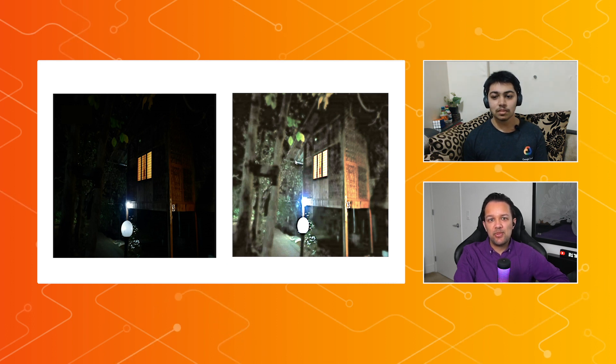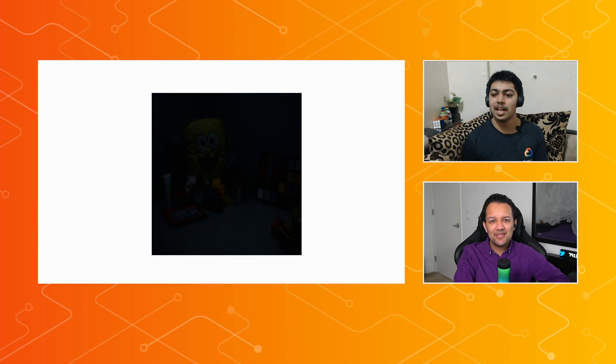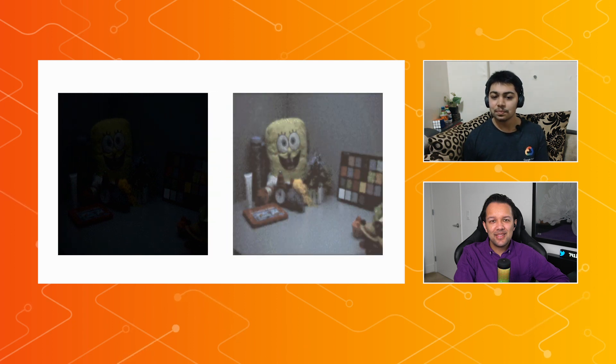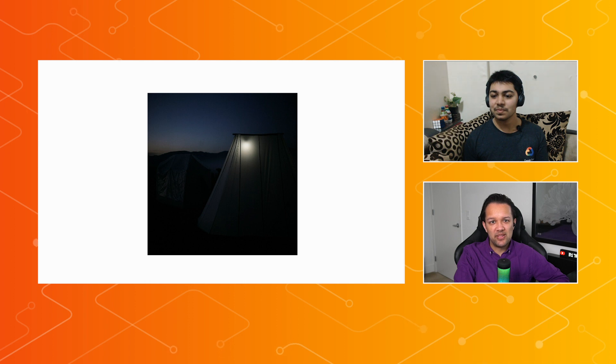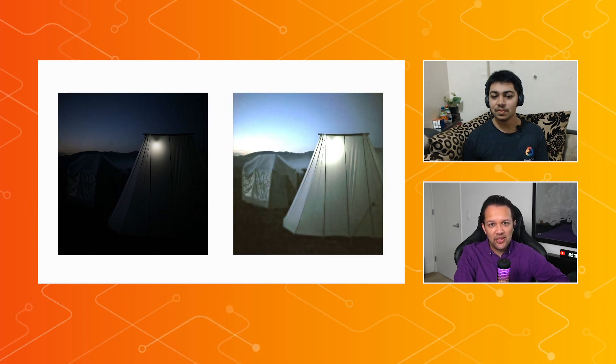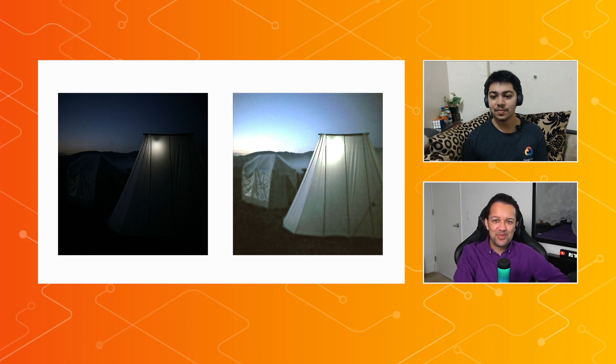A few more example images are shown passing through the model along with their outputs. You can see SpongeBob in one image — impressive since you couldn't see anything before. That's a real big improvement versus the prior image. Another image, which looks like a tent in the desert, also shows a huge difference before and after processing.